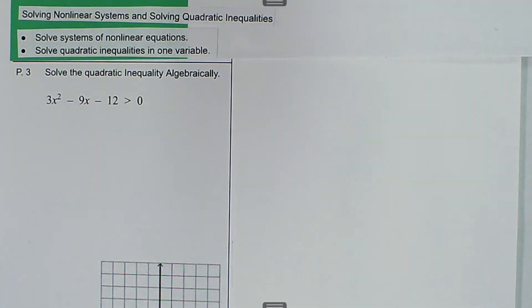We are talking about solving non-linear systems and solving quadratic inequalities, and we want to solve the quadratic inequality algebraically. So here we have 3x squared minus 9x minus 12 is greater than 0.